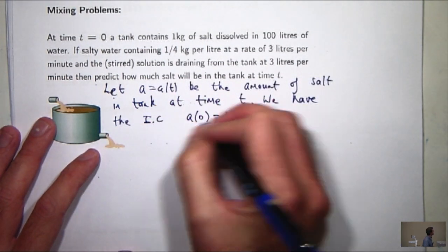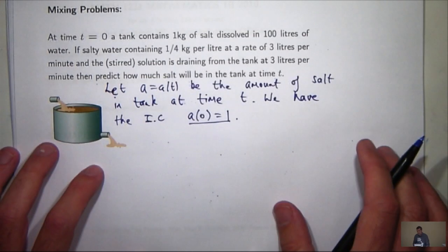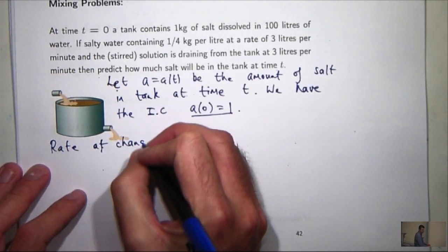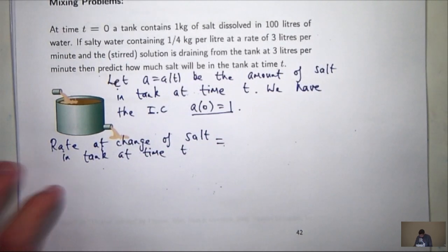So what we need to do now is somehow put these ideas together and come up with a differential equation. Now the differential equation we're going to come up with has to do with the rate of change of salt in the tank with respect to time. There's a real simple way of getting this. So, rate of change of salt in the tank at time t is just the rate at which salt enters minus the rate at which salt leaves. That's it.